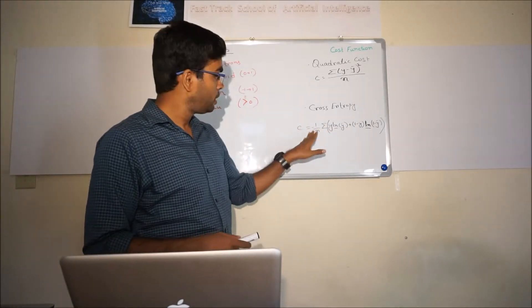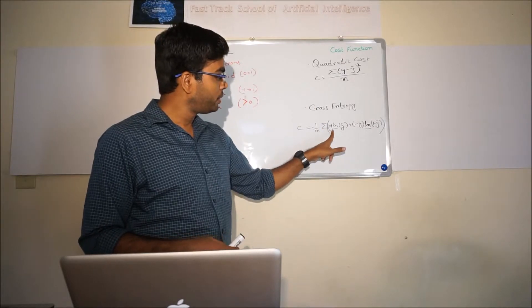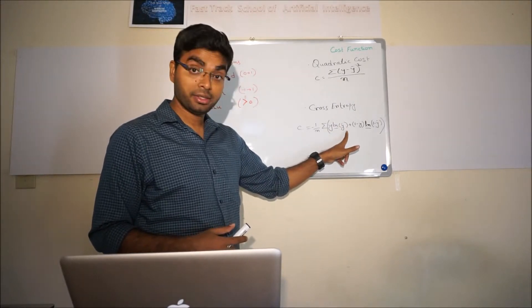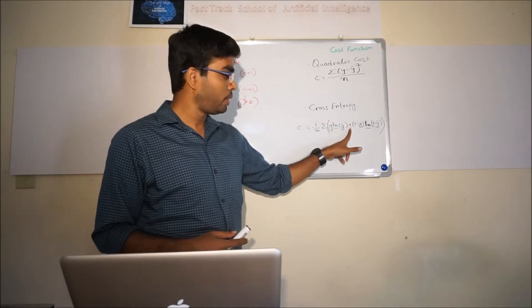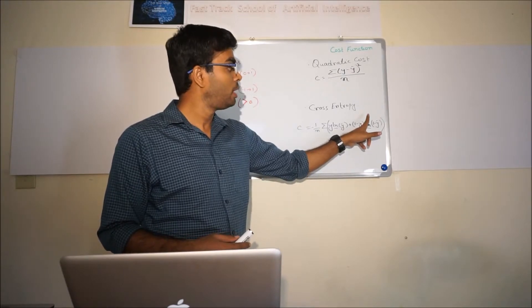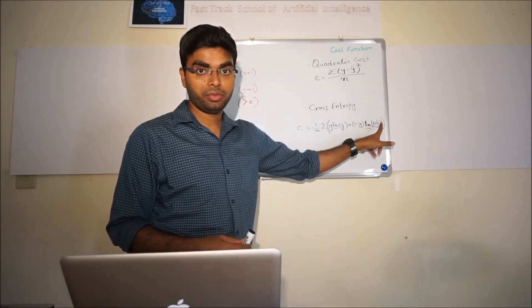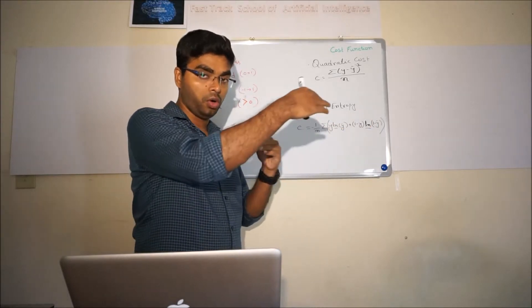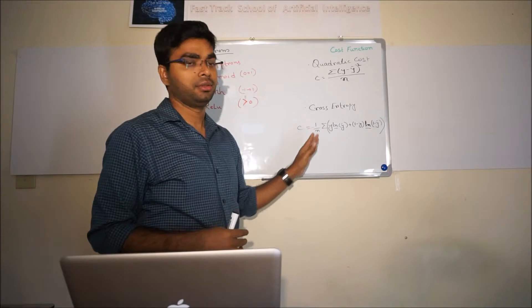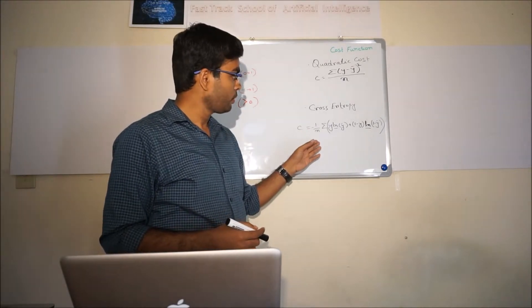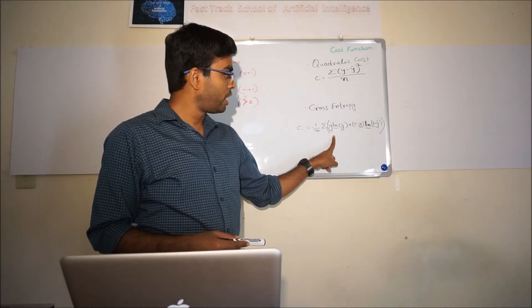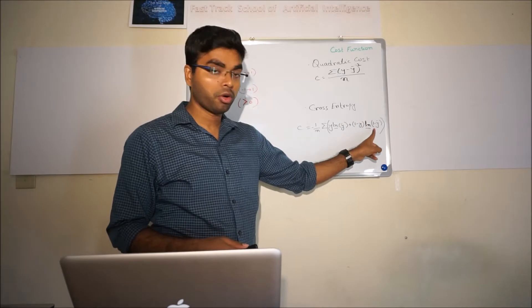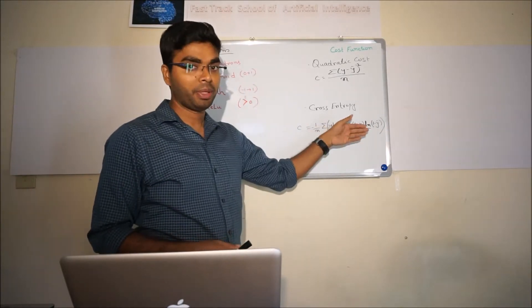Here also, let me read the equation which is kind of complex. It's taking true class into the natural log of predicted class value plus 1 minus true class value and natural log of 1 minus predicted class value. Then we're taking the average for all the samples we have to predict, and then we're taking the negative sign, basically negative of it. If you can memorize this, it's very good, or at least you can write it down.